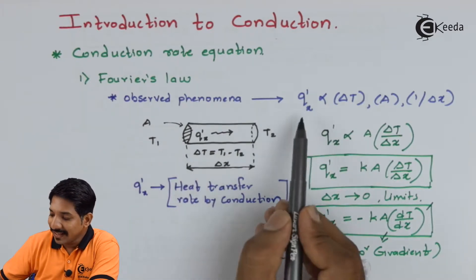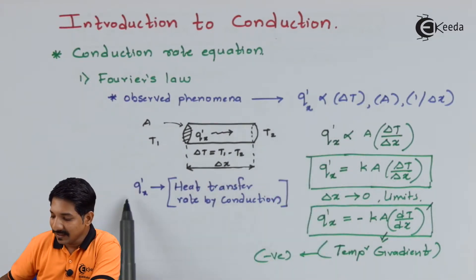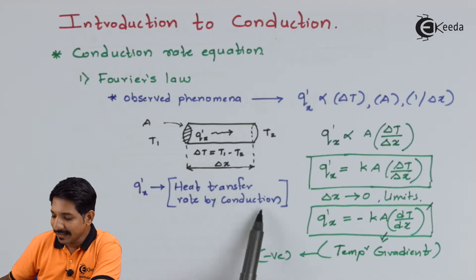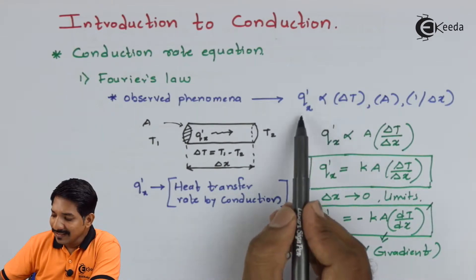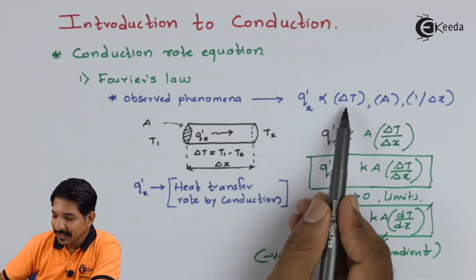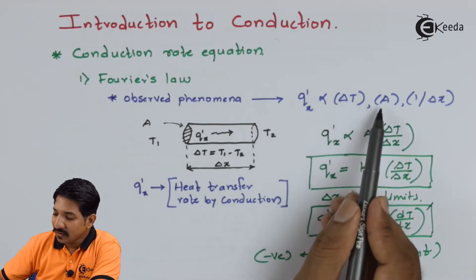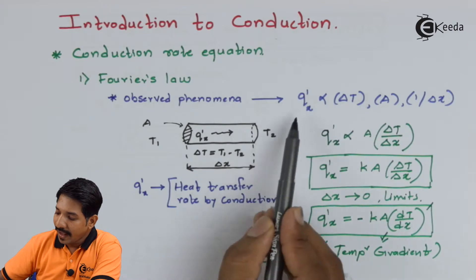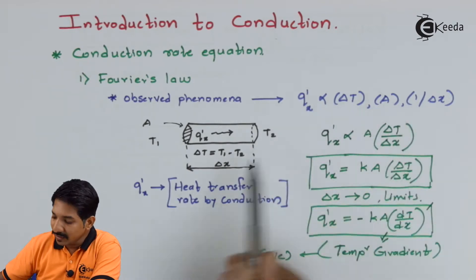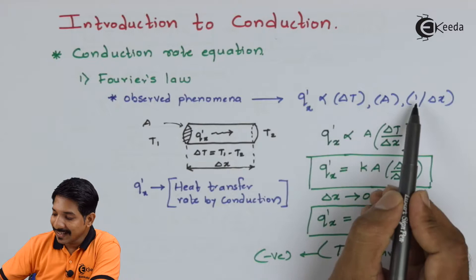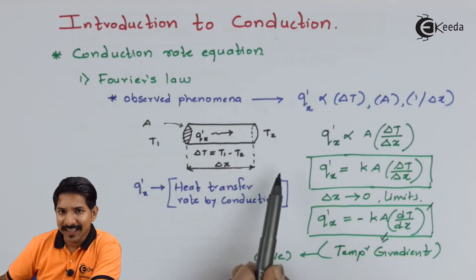Now what he has observed is that Q'x, which is the heat transfer rate by conduction, is directly proportional to delta T, which is the temperature difference and cross section area. And this Q'x is inversely proportional to the length of the tube, so it is written as 1 by delta x.